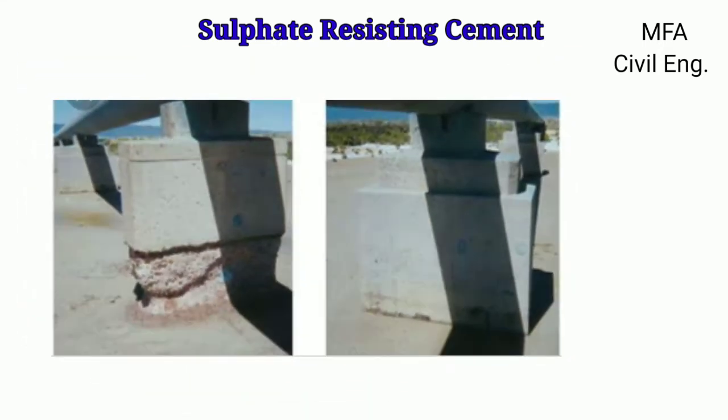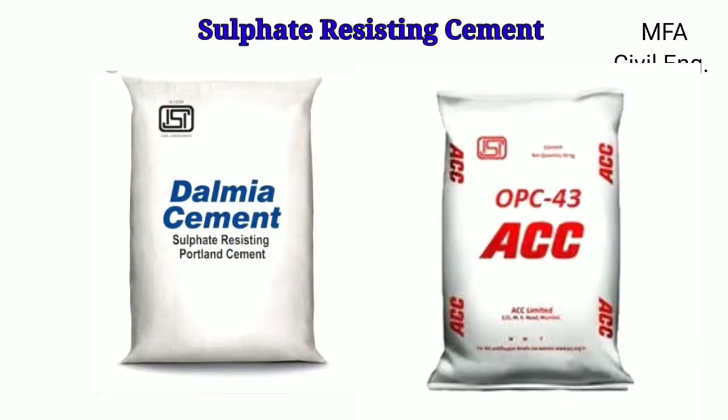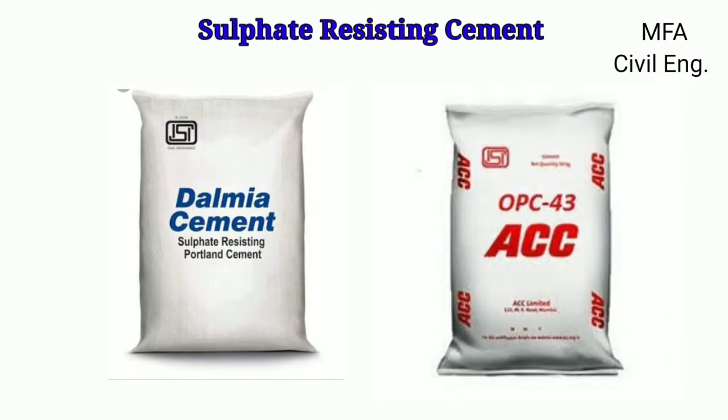To reduce sulphate attack, sulphate resistant cement is manufactured by reducing the tricalcium aluminate, tetra calcium aluminate, and flow rate content. In most physical properties, it is similar to ordinary Portland cement.